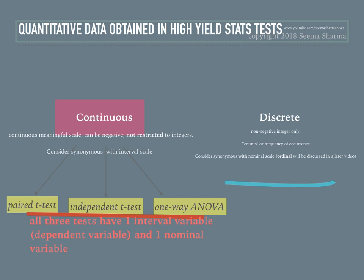Discrete data is non-negative integer only, and it is basically counts or frequency of occurrence. For the purpose of learning these tests, you can consider discrete data as synonymous with a nominal scale. I will discuss the ordinal scale in a later video. The two tests for which we obtain discrete data are the chi-square test and Fisher's exact test, and both tests have only nominal variables.